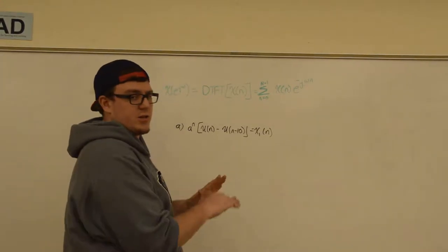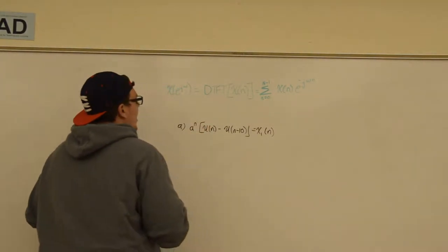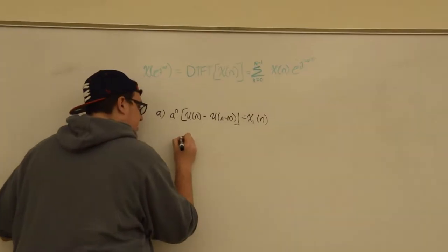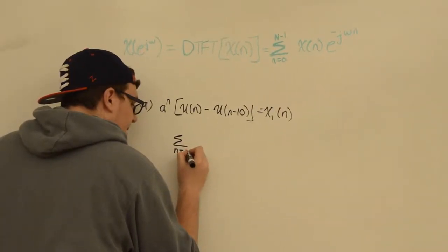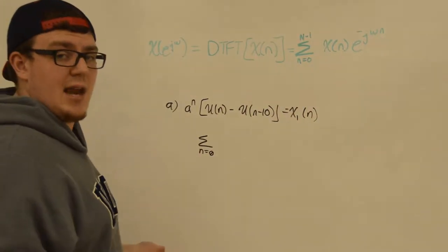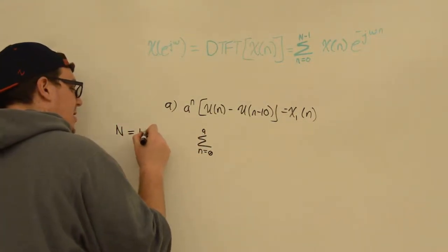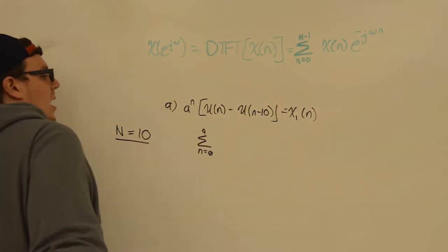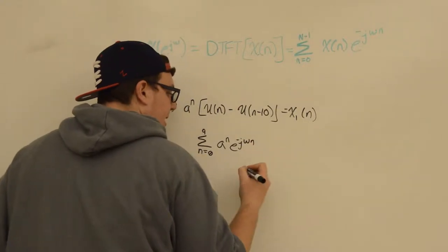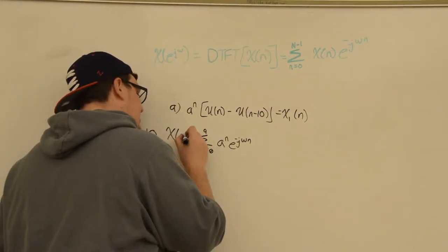This is just a switch — u(n) is a switch on/switch off function, and we're looking at the exponential sum constant a to the nth power. To take the discrete time Fourier transform, we apply the formula: the sum from n equals 0 to the ending index. Because we have u(n - 10), the ending index is 9, so we go from 0 to 9, giving us a capital N — the length of our function — of 10. We sum a^n * e^(-jωn), and that gives us x(e^(jω)), our discrete time Fourier transform.